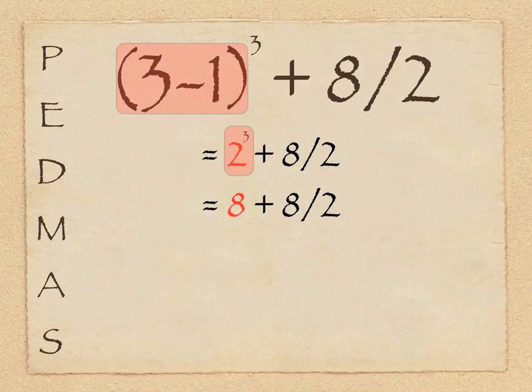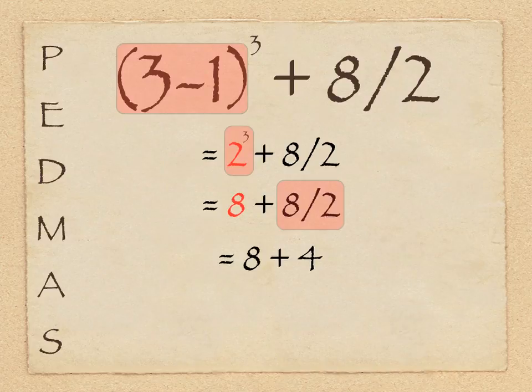Okay, so now we have 8 plus 8 divided by 2. And remember, you might feel that you have to add 8 plus 8 and then divide by 2, but that's not what you do. Be careful here. You want to make sure that you're following PEDMAS and that you follow division or multiplication before you do addition or subtraction. So this time we have to divide. 8 divided by 2 is 4. And then we can add. There's nothing left to do. So now we can add the 8 plus 4 equals 12.